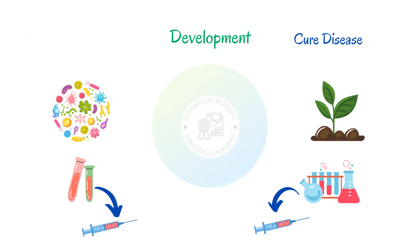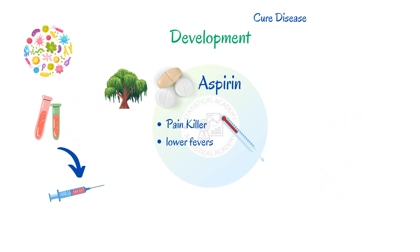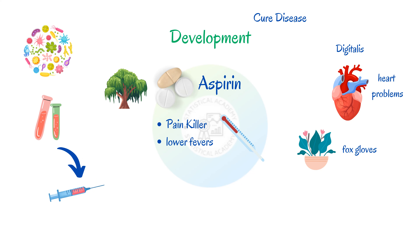Let's take a look at three examples to show you what we mean. Aspirin is a common painkiller that can be used to lower fevers. It is now super common but it was originally developed from a chemical found in the bark of willow trees. Meanwhile, digitalis, which is used to treat heart problems like heart failure, was originally developed from a chemical found in these pretty plants known as foxgloves.